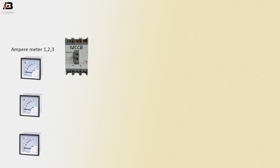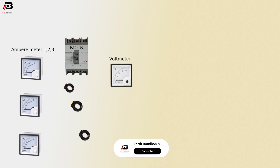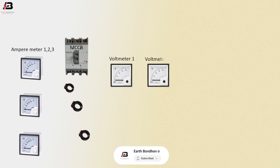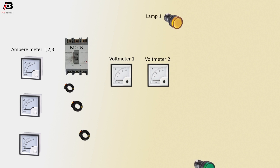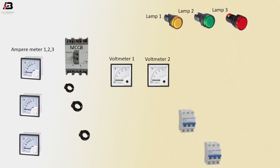MCCB circuit breaker. Ampere meters 1, 2, and 3. 3 CT coils. Voltmeter 1. Voltmeter 2. Lamp 1. Lamp 2. Lamp 3. MCCB circuit breakers.